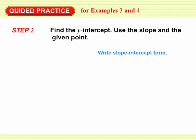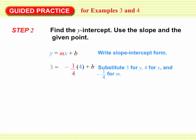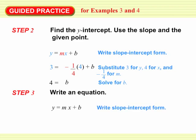Now we need to find the y-intercept. We use the slope and the point we know is on the line. We write slope-intercept form and substitute 4 for x and 3 for y — because the point 4 comma 3 is on the line — and negative 1 fourth for m to make the line perpendicular. Solving for b gives b equals 4. So the equation of the new line is y equals negative 1 fourth x plus 4, which is perpendicular to the given line and passes through the point 4 comma 3.